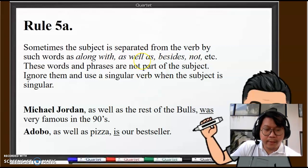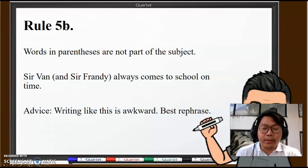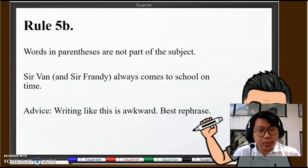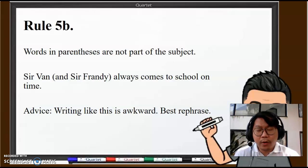Let's have a look at the next rule now. Rule 5b: Words in parentheses are not part of the subject. For example, "Sir Van (and Sir Frandy) always comes to school on time." The verb here is "comes" with an "s," so obviously it's in the singular form, and that's correct. What sounds awkward is when you read it: Sir Van and Sir Frandy always comes to school on time. It sounds wrong, but if it's written down with parentheses, we have to ignore the words within the parentheses, so the subject is really just Sir Van, singular, therefore "comes" is correct.